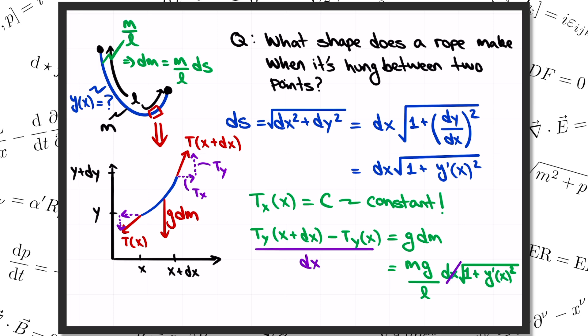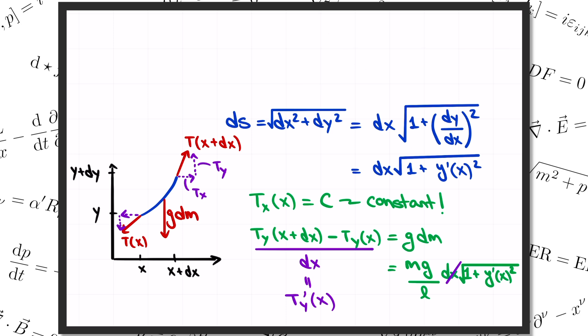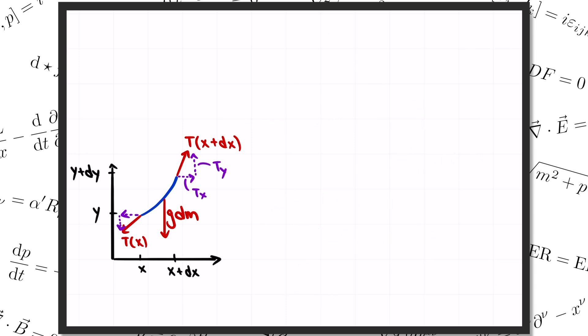So by demanding that the total force on our little piece of rope must be equal to zero, we've obtained two equations. The horizontal equation says that the horizontal component of the tension is a constant, and the vertical equation says that the derivative of T y is equal to mg over l times the square root of 1 plus y prime squared.